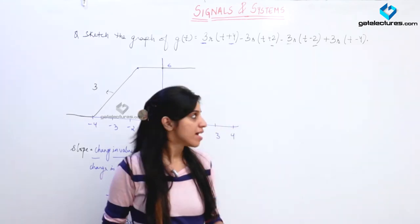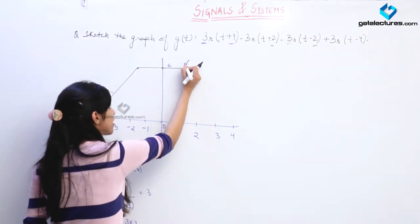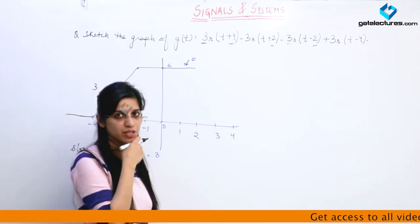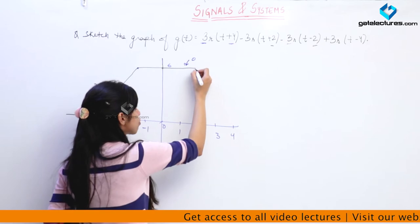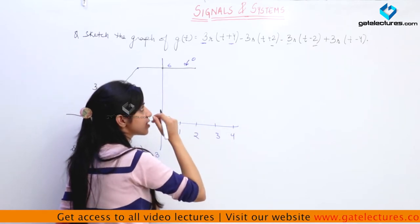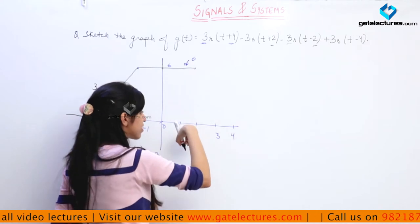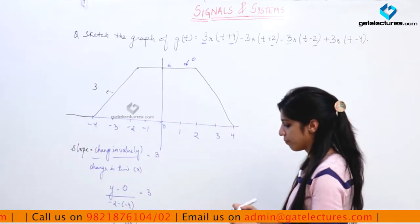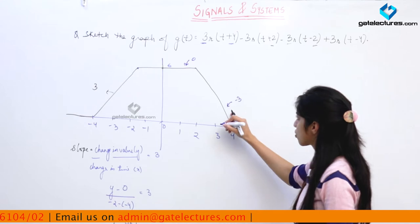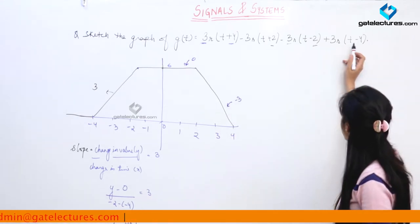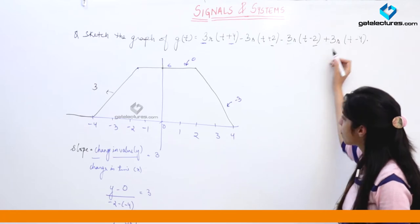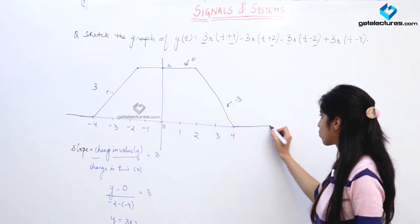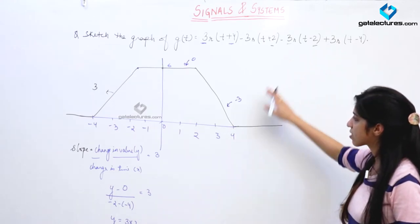At T equal to 2, slope is decreased by minus 3 again. Right now the slope of the line was 0, and at T equal to 2 the slope decreases by 3, which means the slope of the line must become minus 3 now. So at T equal to 2, slope changes and becomes minus 3, meaning the value drops to 0 at T equal to 4. At T equal to 4, slope changes again by plus 3, making the slope 0 again.